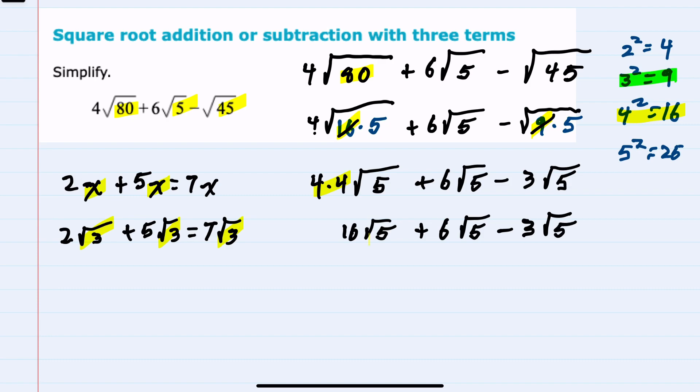Since they all have that same square root of 5, we can combine these terms. Since 16 + 6 is 22 minus 3 is 19, we are left with 19√5 as our simplified solution.